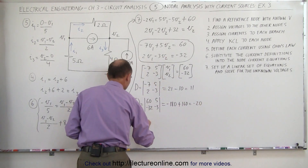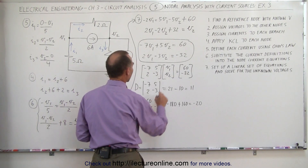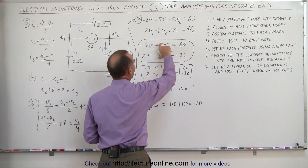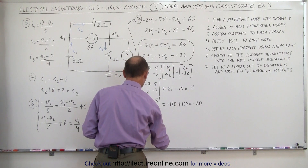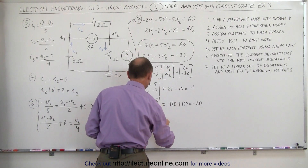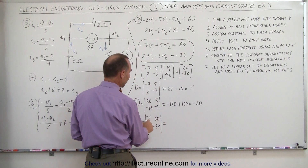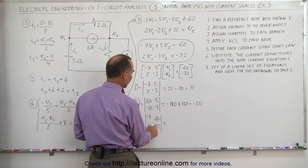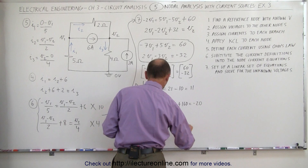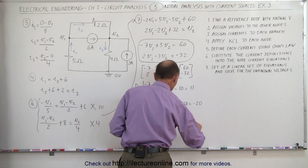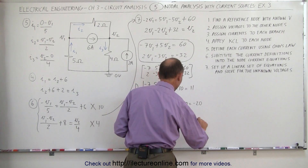For V2, we replace the second column coefficients with sixty and minus thirty-two. That gives us minus seven times minus thirty-two minus two times sixty. Seven times thirty-two is two twenty-four, minus two times sixty which is one twenty, giving us one hundred and four.